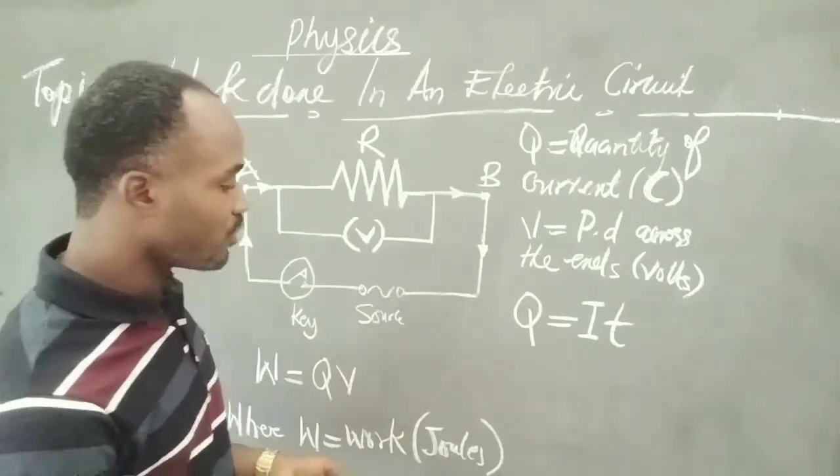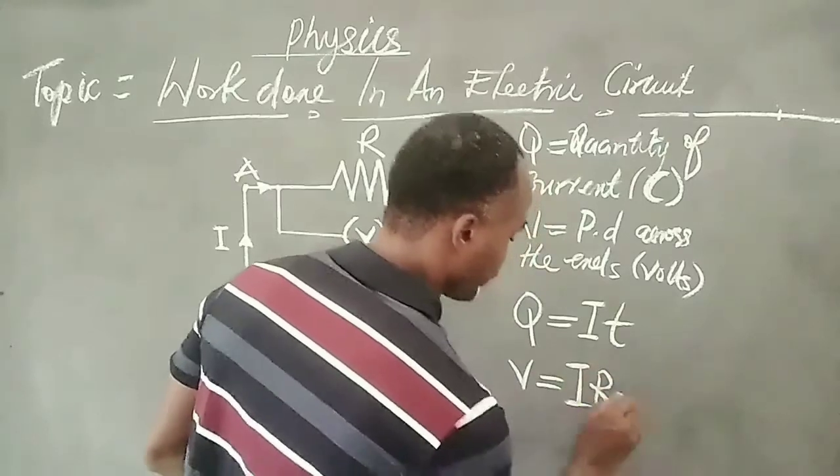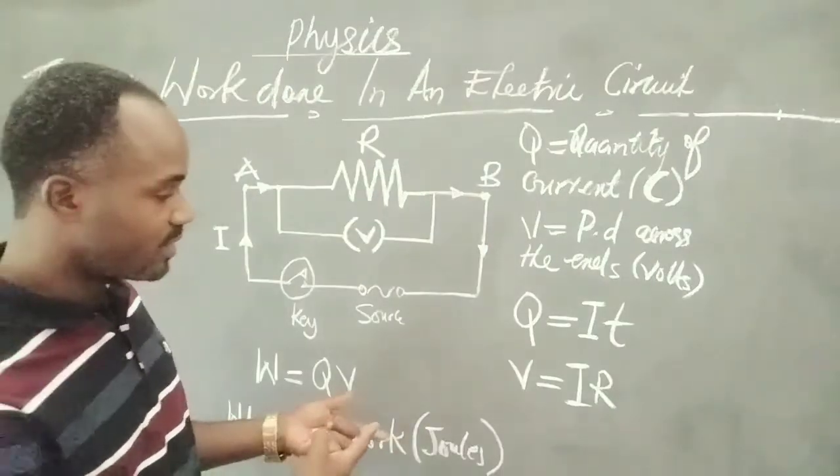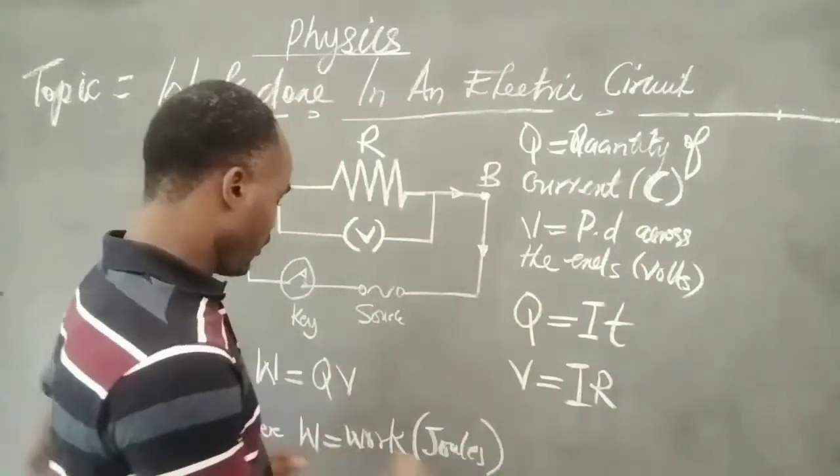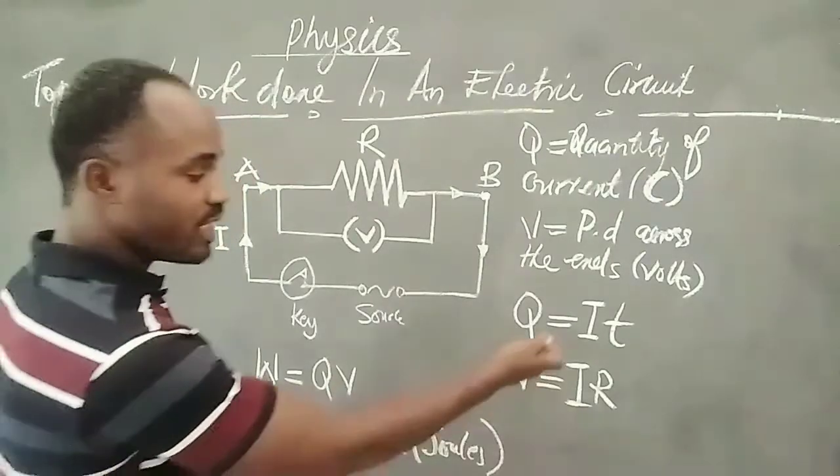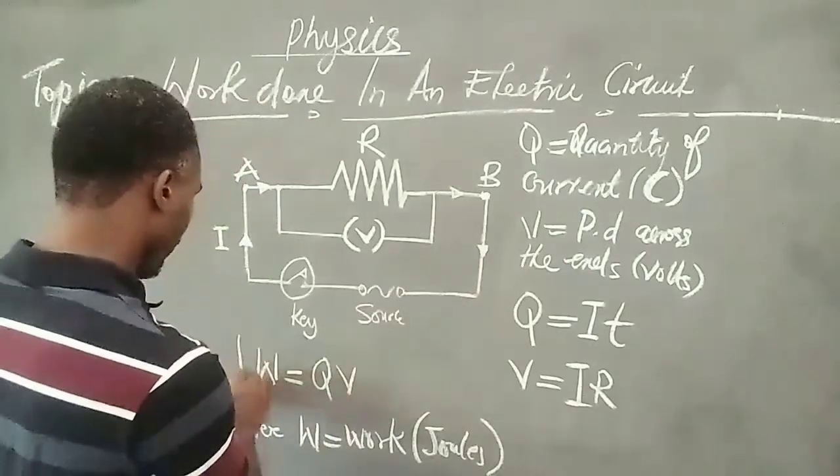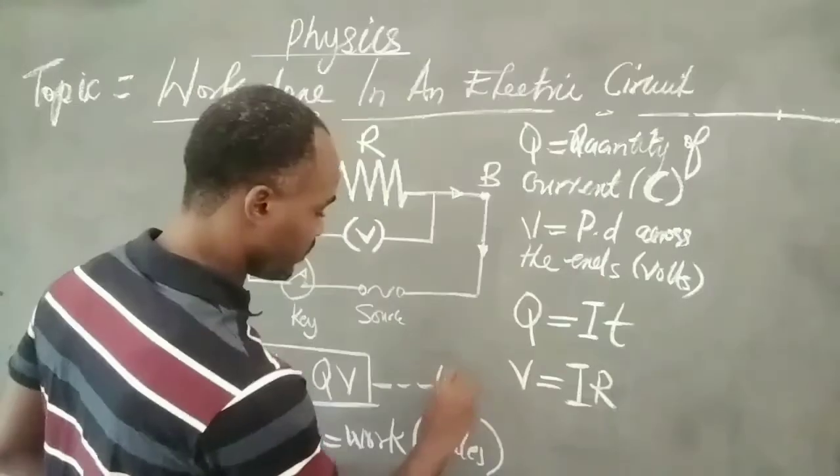So the next thing I'm going to consider is V. V is IR. If we do this, you can see we'll have to substitute these values, Q and V respectively, into the first relation. This is the first relation, relation 1.